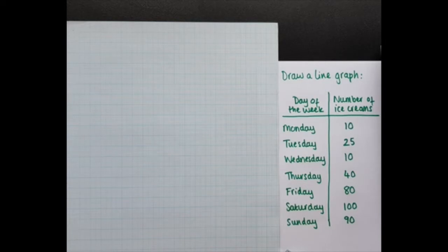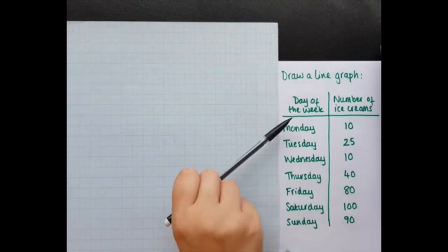So line graphs are used for data that changes over time. You can see my data set is looking at the number of ice creams sold for each day of a week.